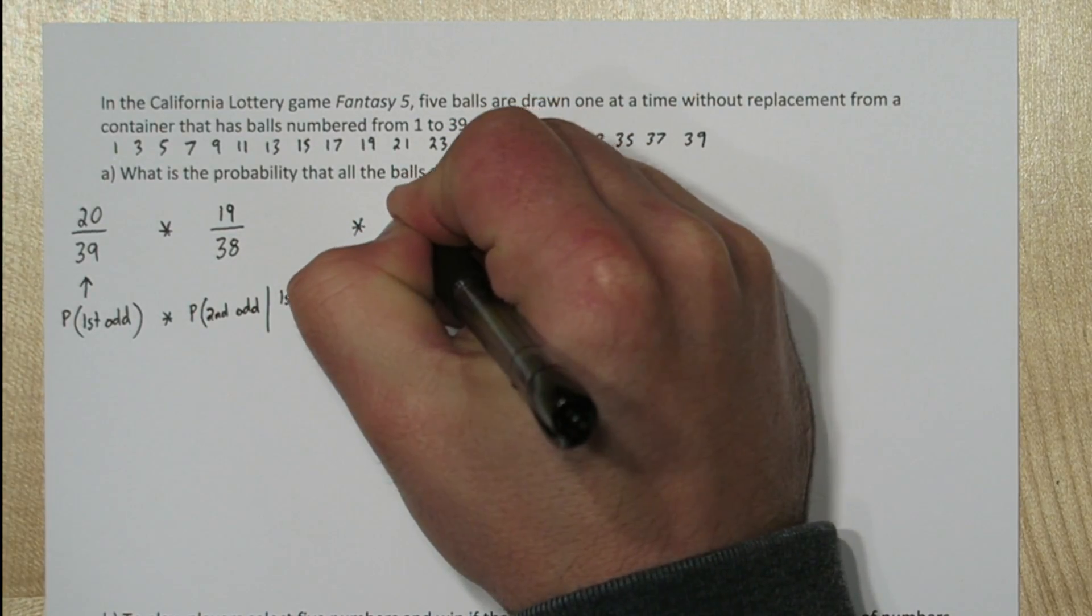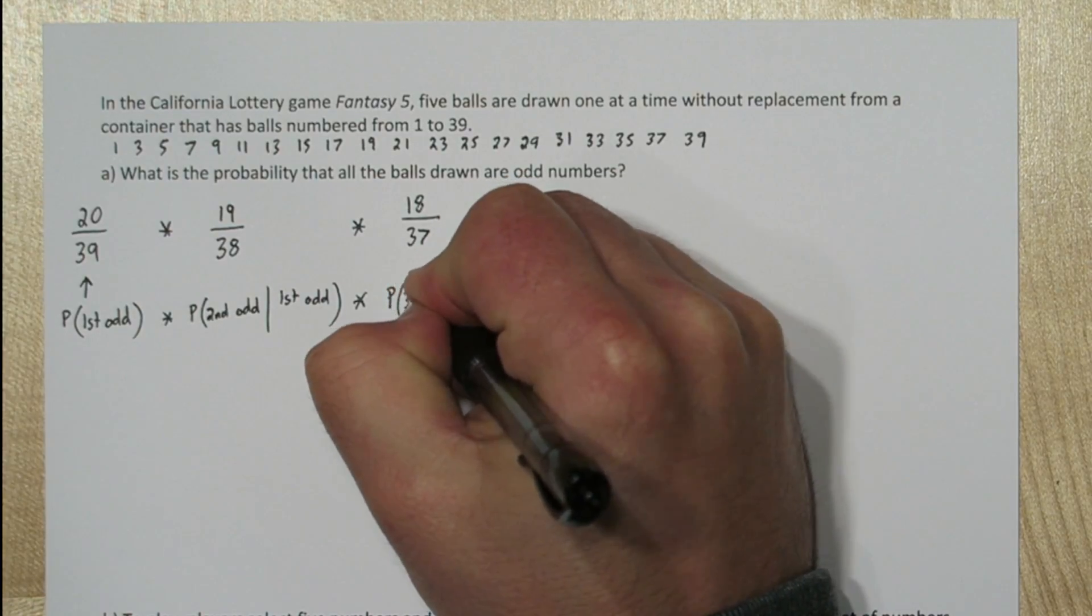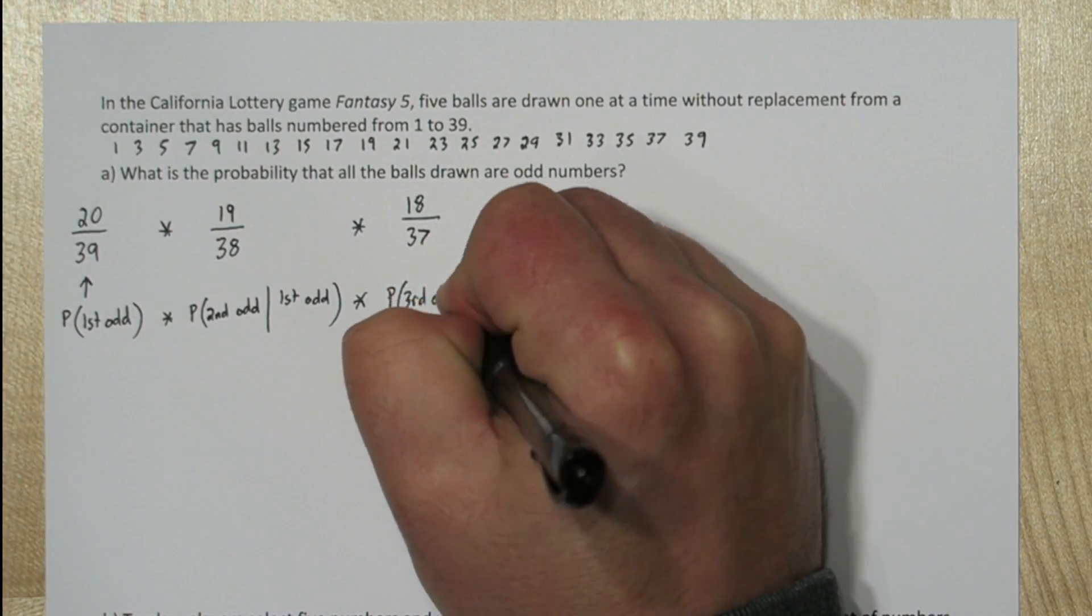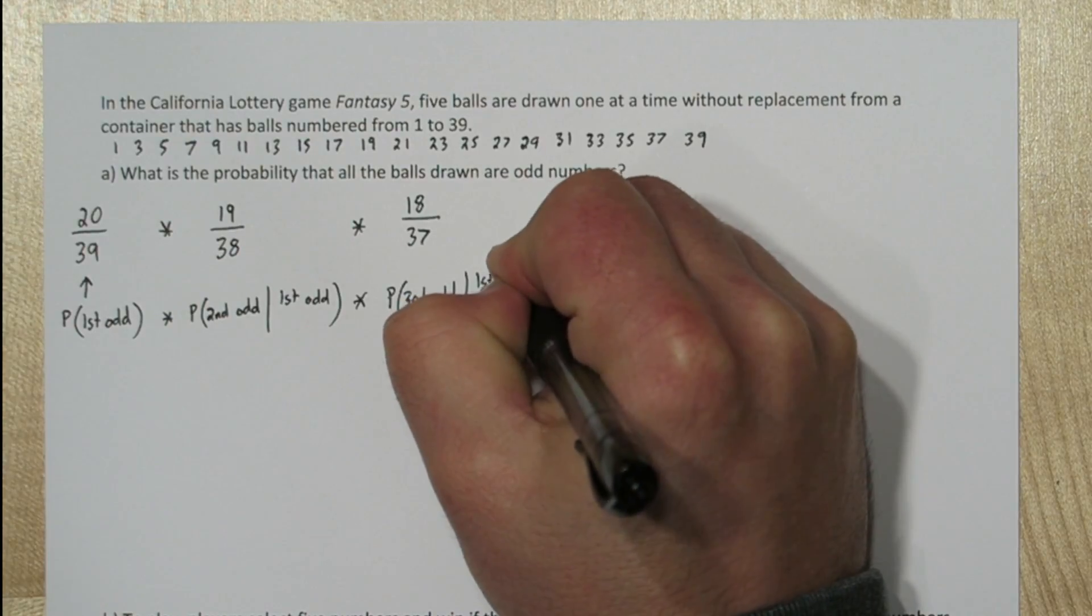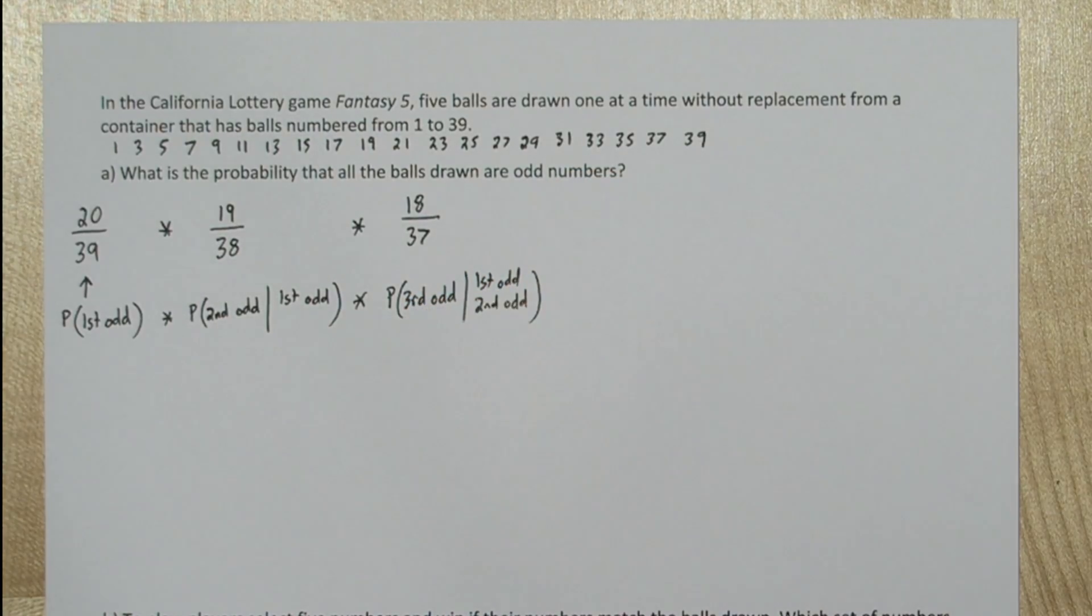Once those two odd numbers have been selected, there's only 18 left, out of a total of 37 numbers. So the probability that the third number is odd, given the first and second were already odd, is 18 over 37.